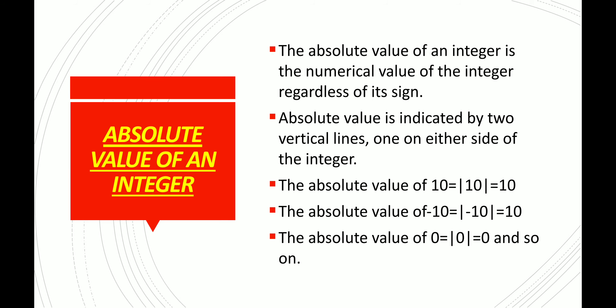Now let us know what is the absolute value of an integer. The absolute value of an integer is the numerical value of the integer regardless of its sign. For example, the absolute value of 5 is 5, and the absolute value of minus 5 is also 5. So irrespective of its sign, we take the value as the number itself.